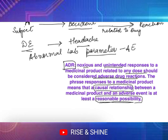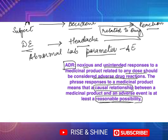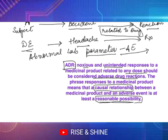So an adverse event that you have reported — the moment there is a suspicion, not even confirmation, just a possibility that it may be related to the drug — it becomes a reaction. Similarly, an abnormal lab parameter will also become a reaction if it is found to be related to the drug. That is the main difference: if it is related to the drug, it is a reaction; if not, it remains an event.